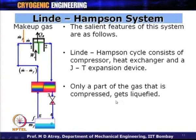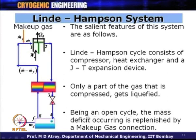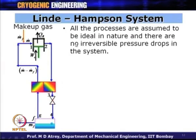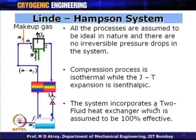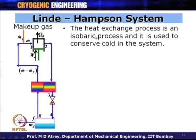The Linde-Hampson cycle consists of a compressor, heat exchanger, and JT expansion valve. Only a part of the gas that is compressed — m-dot-f — gets liquefied out of m-dot compressed. Being an open cycle, the mass deficit is replenished by a make-up gas connection. All processes are assumed to be ideal with no irreversible pressure drops in the system.